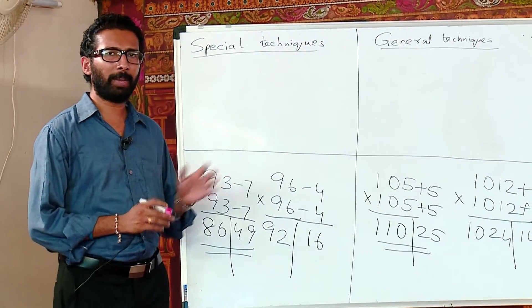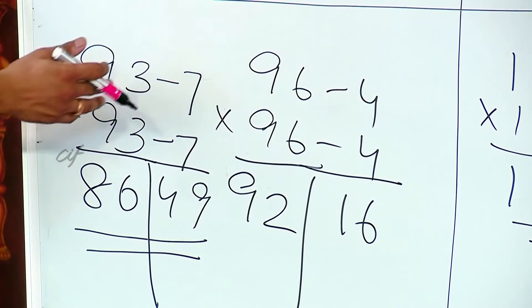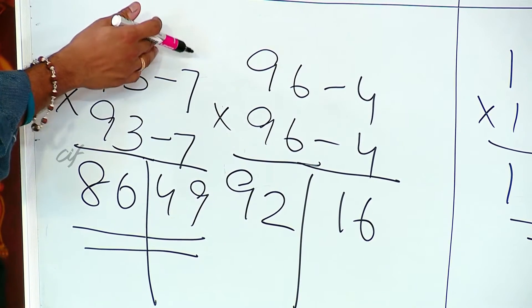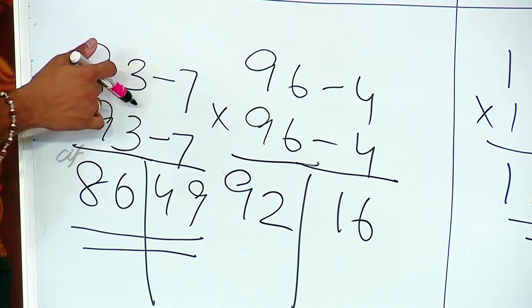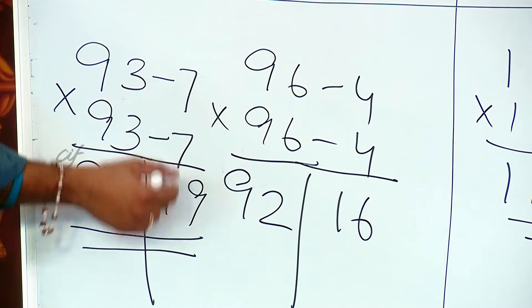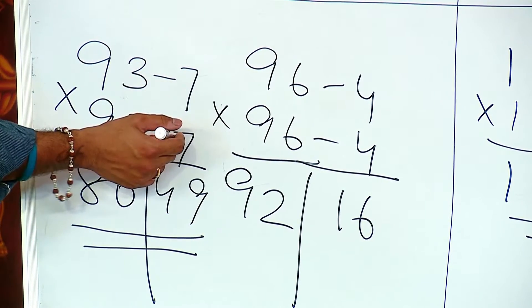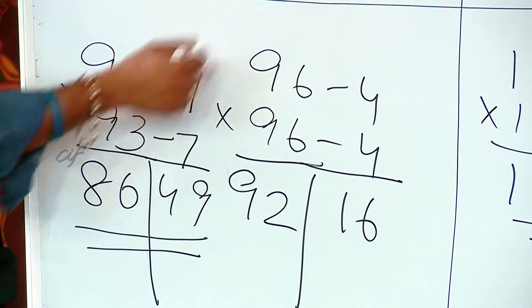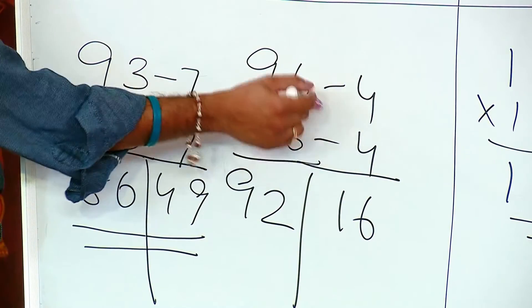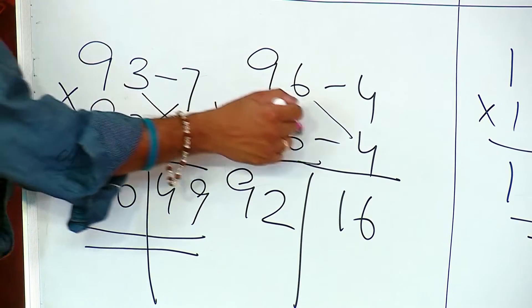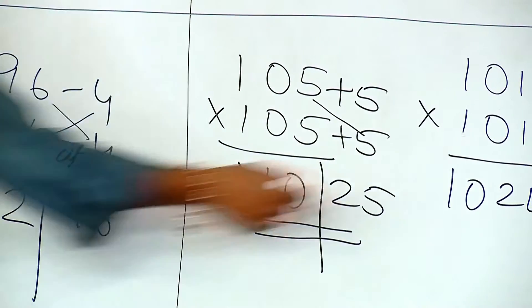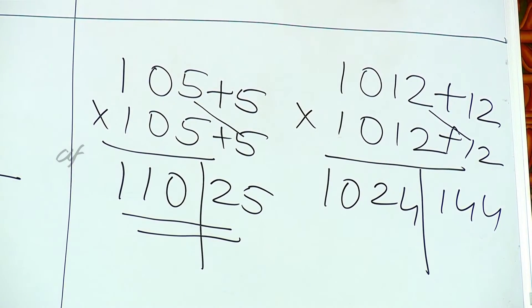I am sure that you might have seen some pattern in this. As you can see in all the numbers, all of them are near to a power of 10. 93 is near to 100. So I will just write 100 minus what number is 93 or the complement of 93 from 100. So that is 7. So I write a minus 7 and minus 7 and I just multiply this 7 and 7. I get 49. 93 minus 7 gives me 86. Same goes over there. 100 minus 96 is 4. 4 times 4 is 16. 96 minus 4. So I am just subtracting it crosswise. So here also 5 times 5 is 25. 105 plus 5 is 110. 1012 plus 12 is 1024.